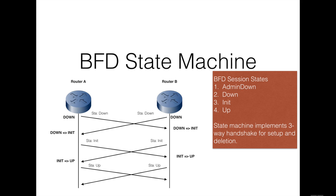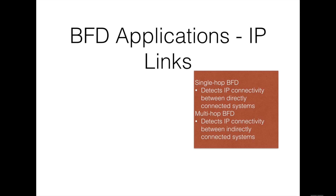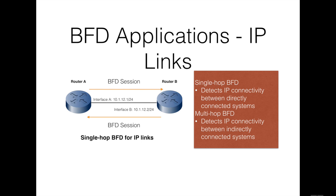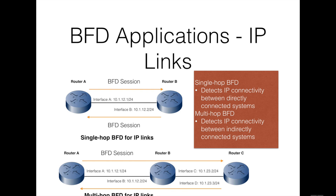There are two types of BFD sessions on IP links. A single-hop BFD session detects IP connectivity of the forwarding link between two directly connected systems and is bound to the outbound interface. A multi-hop BFD session detects IP connectivity of paths between two indirectly connected systems — these paths may span multiple hops or overlap — and the BFD session is bound to the peer IP address but not to the outbound interface.